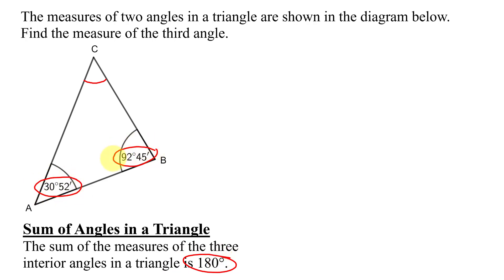Now, if both of these angles had been given as just degrees or as decimal degrees, this would be a very simple problem. But it's slightly more complicated since the angle measurements are given in degrees and minutes. So, I'm going to have to add up these two angles and then subtract that sum from 180 degrees.